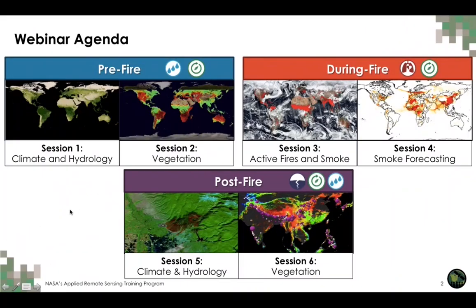In Sessions 1 and 2 we looked at pre-fire weather and climate conditions, vegetation health and fire fuel conditions using remote sensing observations and earth system model data. Also in Parts 3 and 4 we looked at fire and smoke detection from satellite observations and impacts on air quality.